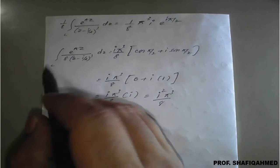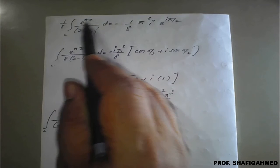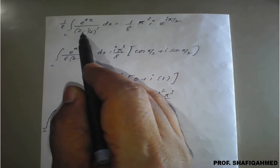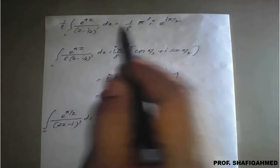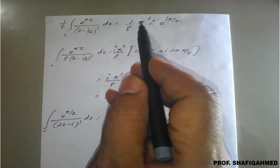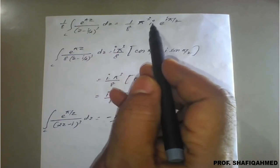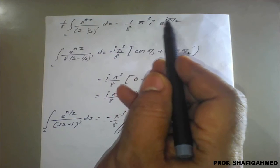We get 1 upon 8 into integration of e raised to pi z upon z minus i upon 2 cube dz equals 1 upon 8 pi cube i into e raised to i pi by 2.